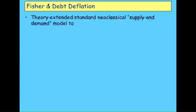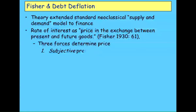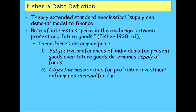He extended the standard supply and demand analysis of neoclassical economics to finance, and saw the rate of interest as the price in the exchange between present and future goods. He saw three forces determining that price. One was a subjective preference that individuals had — not companies, and subjective rather than objective — for present consumption over future consumption, which determined the supply of money on the market. Then the objective possibility for profitable investments determined the demand for funds from corporations, and the market brought the two into equilibrium.